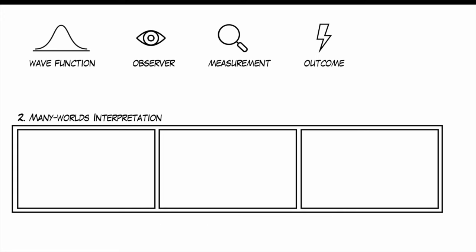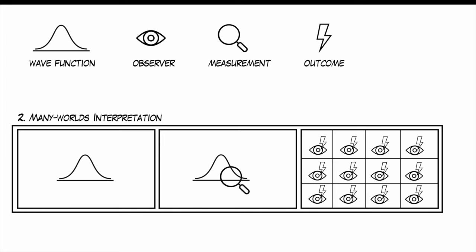Now let's go to the many worlds interpretation. In the many worlds interpretation, we start out the same way as in the Copenhagen interpretation — there is a wave function representing all the possible outcomes. But when we measure the system, there is a big difference. In the many worlds interpretation, every possible outcome of a quantum measurement happens, but in different parallel universes or branches of reality. So there is no wave function collapse, but each possible outcome corresponds to a different world — all possible outcomes happen.